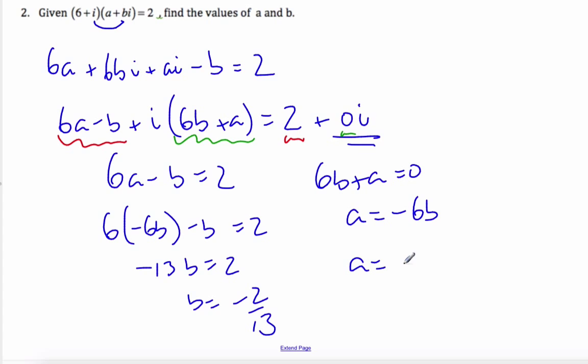And so a will be negative 6 times the b value, which is 12 over 13 for a. And so we can solve various equations using the algebra of complex numbers.